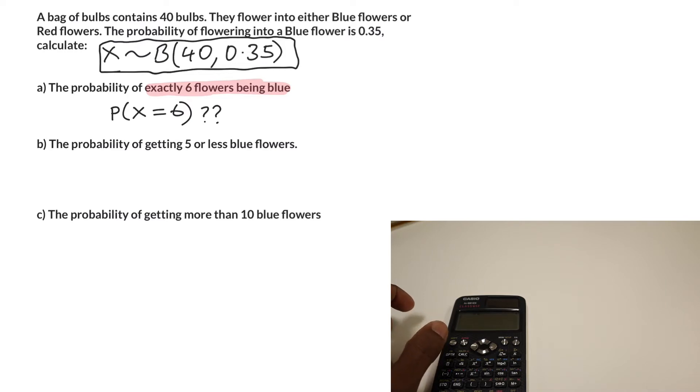Now there's a couple of ways to do this. You can do this by writing out some combinations. If you think about it, there's 40 bulbs and you want six to be blue. So what you want is one, two, three, four, five, six blues and then everything else red. There's got to be another 34 reds. So you've got 34 reds and six blues.